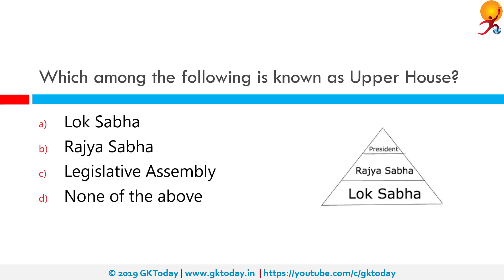Which among the following is known as the upper house? The correct answer is Rajya Sabha. The members of Lok Sabha are elected directly by the people of India through democratic elections. On the other hand, the members of Rajya Sabha are not directly elected — twelve are nominated by the president and the rest are representatives of states and union territories. Hence the Lok Sabha is called the lower house and the Rajya Sabha is called the upper house of the Parliament of India.